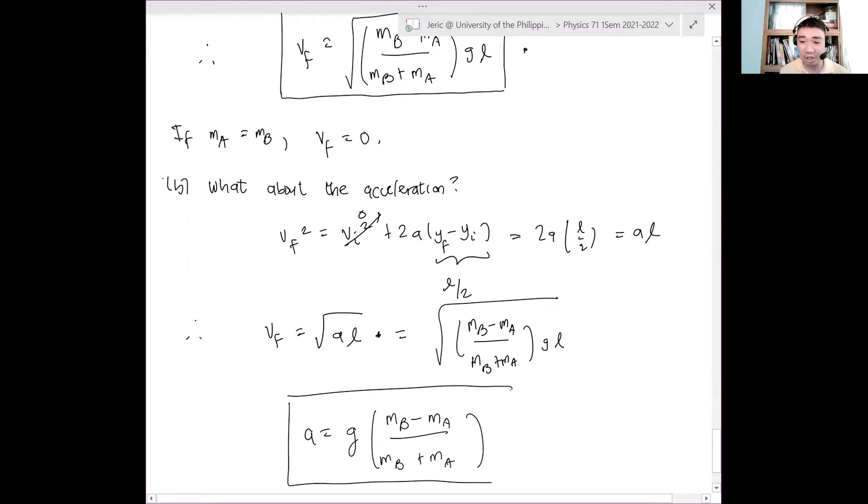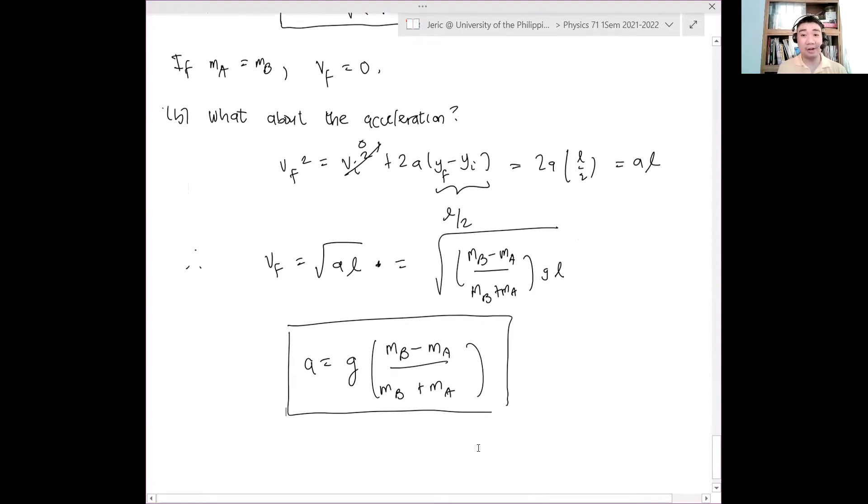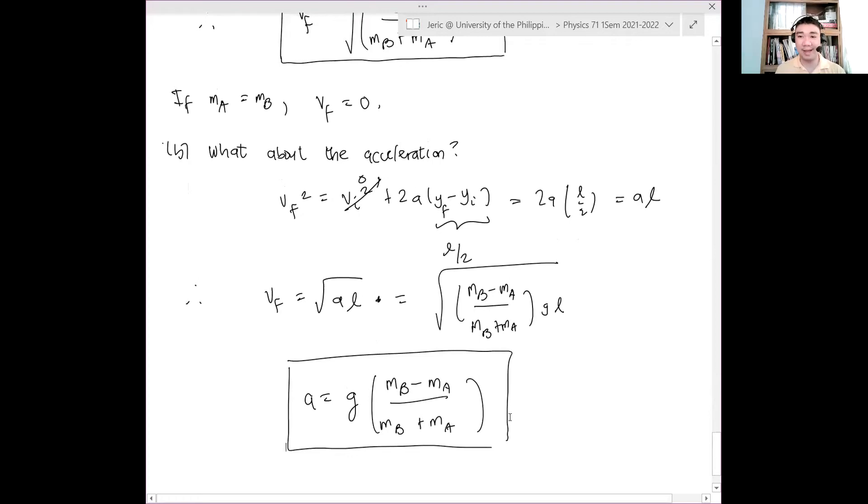This is also the same acceleration for an Atwood's machine. It's the same acceleration that you'll get, but instead of using forces, I use energies in deriving the acceleration of an Atwood's machine. Do you get this item? Again, it's L over 2 because you started with zero, go to L over 2. You started with L, you go to L over 2. That's why L over 2 is the displacement.